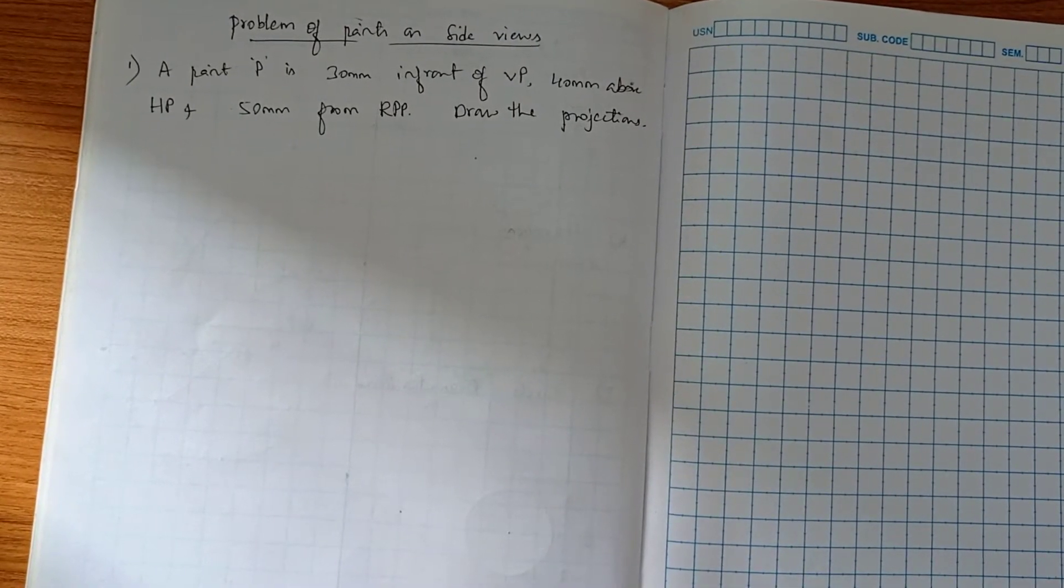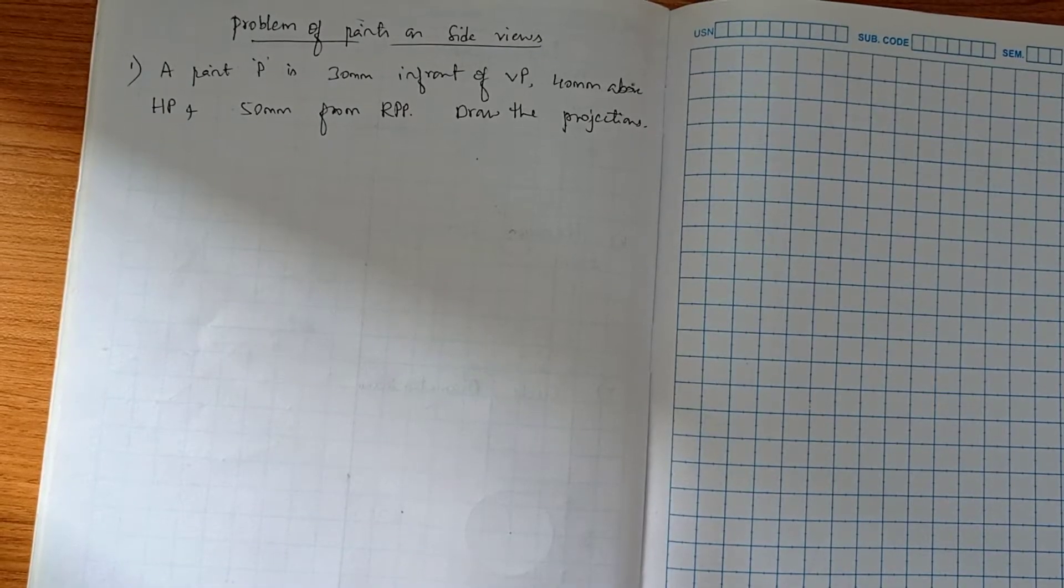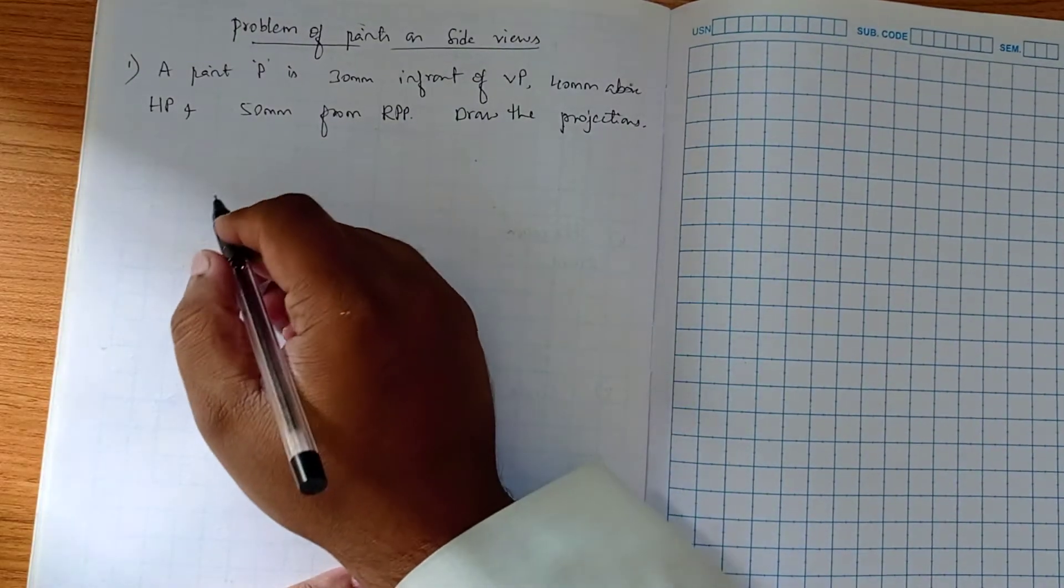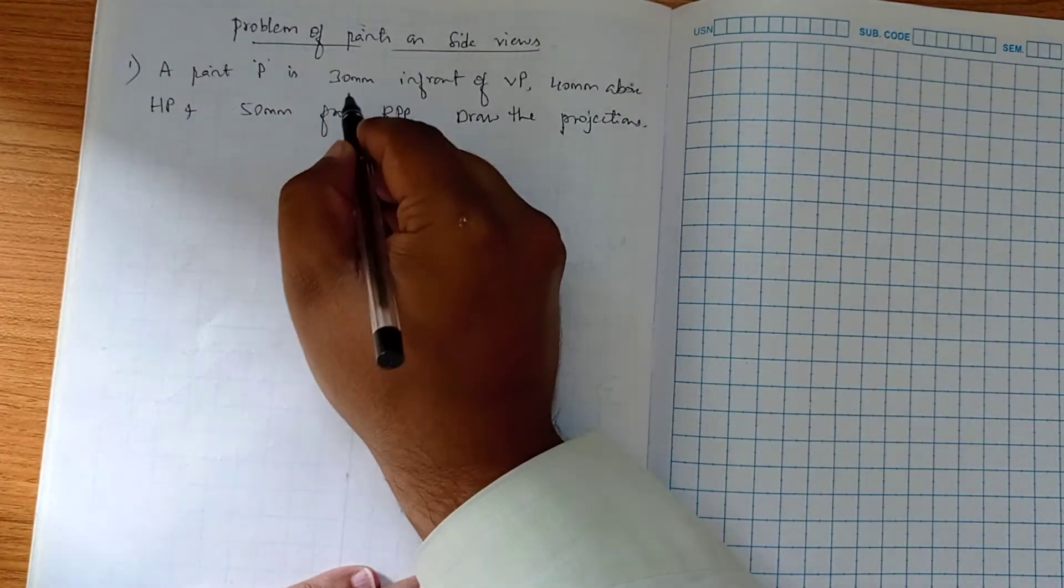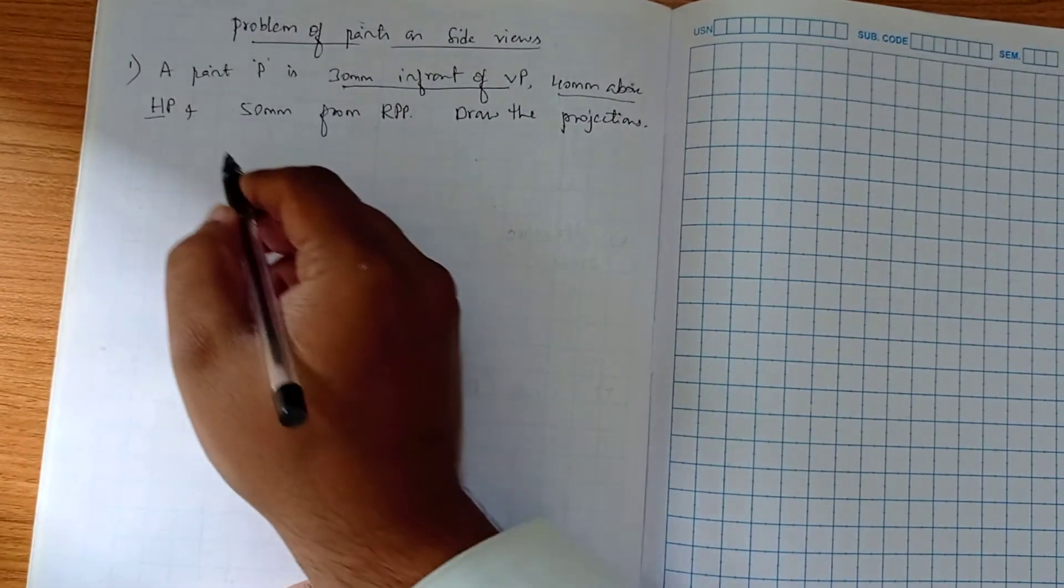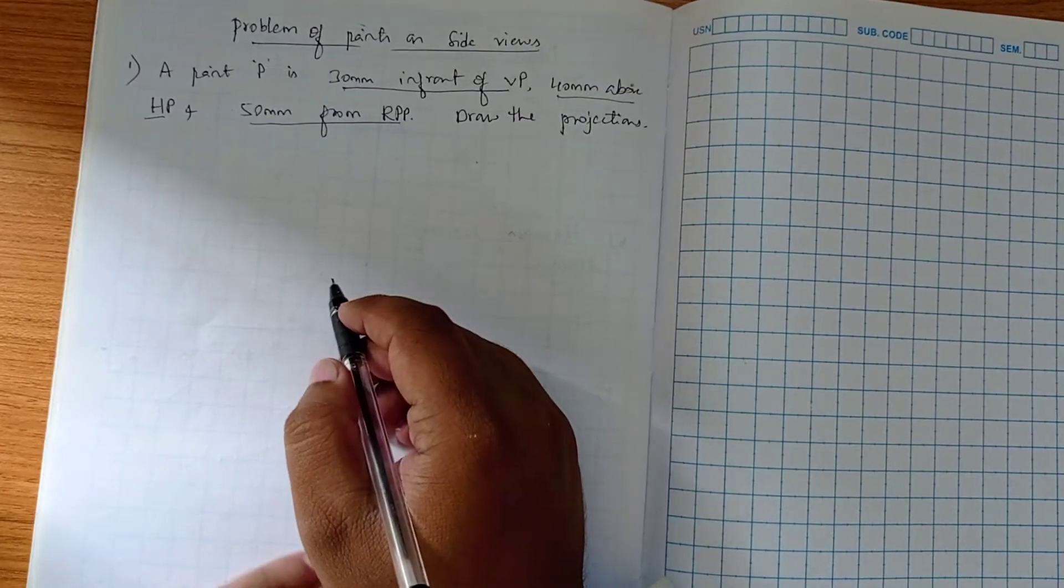Today we are going to discuss problem of points on side views. In this problem we will be dealing with the side views. We will go with the question: a point P is 30mm in front of VP, 40mm above HP, and 50mm in front from RPP.